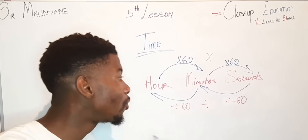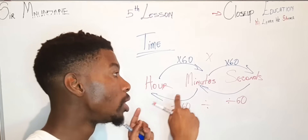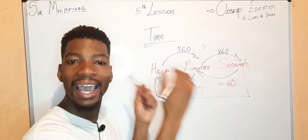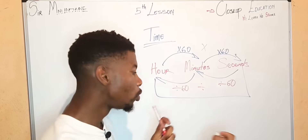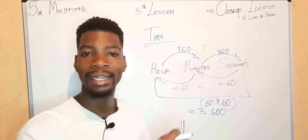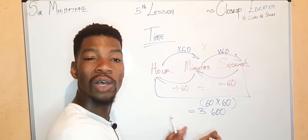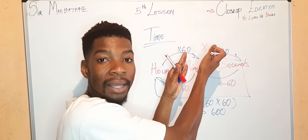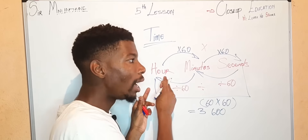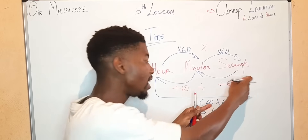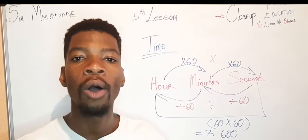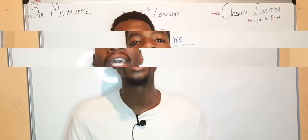You can also convert from hour straight to seconds. You simply say 60 times 60, which equals 3600. So you'll be using 3600 to multiply or divide when moving from hours to seconds or from seconds to hours. Now that we understand our matrix system, let's do our first example.